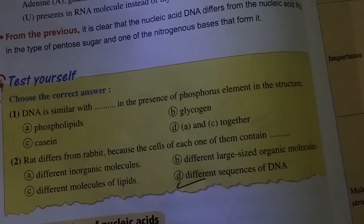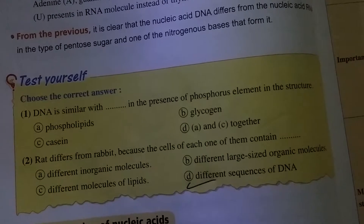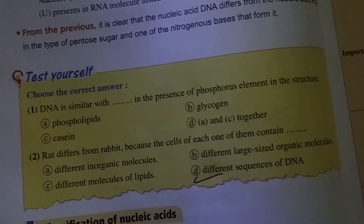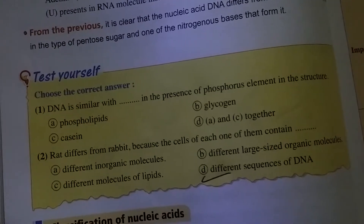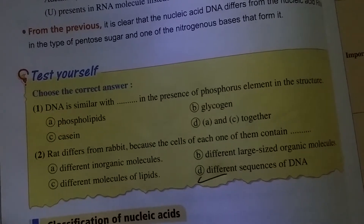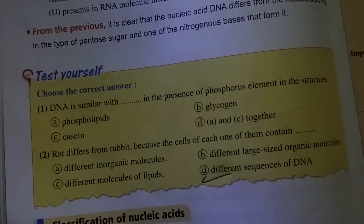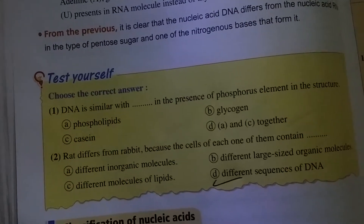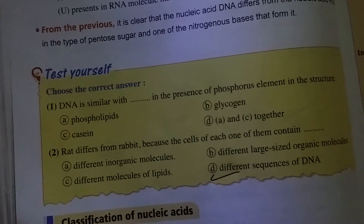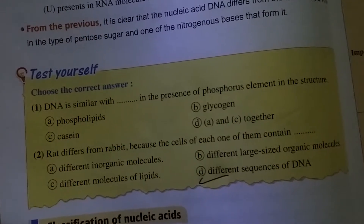The choices are: phospholipids, glycogen, casein, and ENC. The answer is D — phospholipids and casein both contain phosphorus elements in their structure.